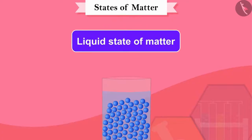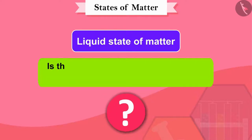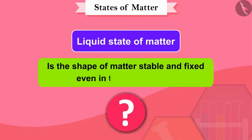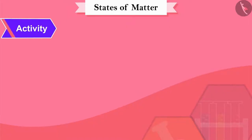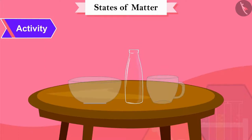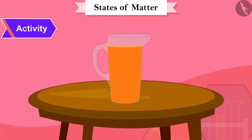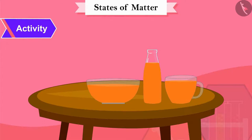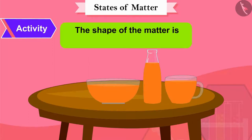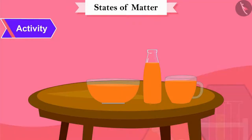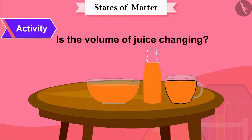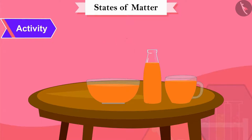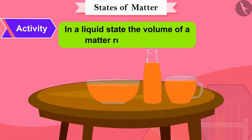Now let us see the liquid state of matter. Unlike solid matter, is the shape of matter stable and fixed in the liquid state? Let us find this out. There are three different sizes of glass utensils and juice in a jug. The juice has taken the shape of the jug. When we pour the juice into the glass pots one by one, the juice changes its shape every time. This means the shape of matter is not fixed in the liquid state. However, the volume of juice does not change from one vessel to another — in a liquid state, the volume of matter remains fixed.